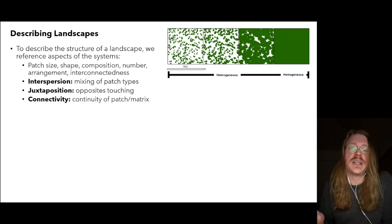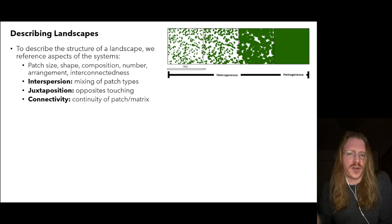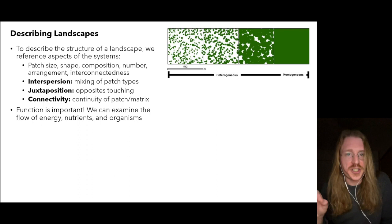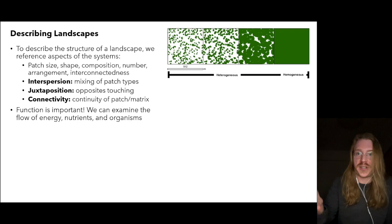Finally, we have connectivity. However interspersed the patches are, are they still connected? To what degree might they interact with the underlying matrix and with each other? This is where function becomes very important as well. At the landscape level, we also study the flow of energy, nutrients, and organisms.